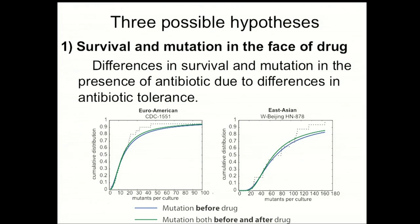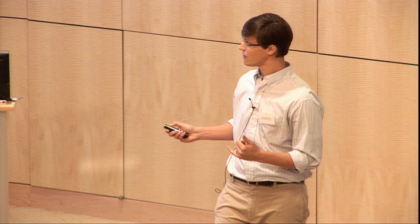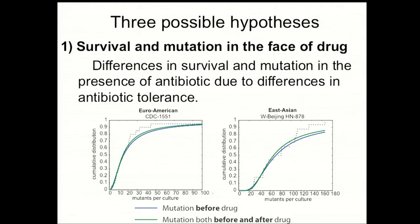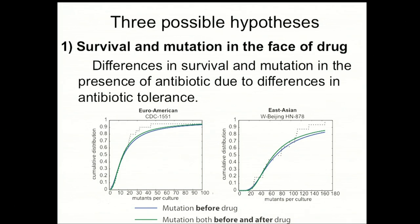We addressed our first hypothesis — survival, growth, and mutation in the presence of drug — by asking about the distribution at which mutations occur. Mutations occurring in culture will have a very different distribution from mutations occurring on the plate, and we can use curve fitting to fit two different models to our data. We don't find evidence of any mutations occurring on the plate, and that's true for both strain backgrounds. We can also use the same analysis to ask if there are fitness differences between strains, and we don't find any difference in fitness either. So we can rule out survival and growth in the presence of antibiotic and fitness differences.